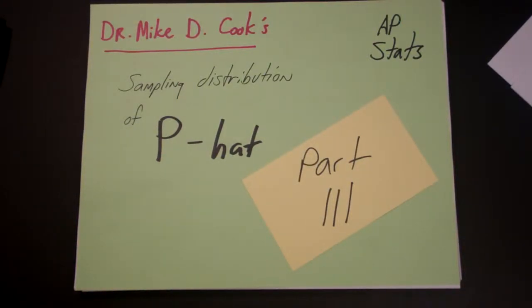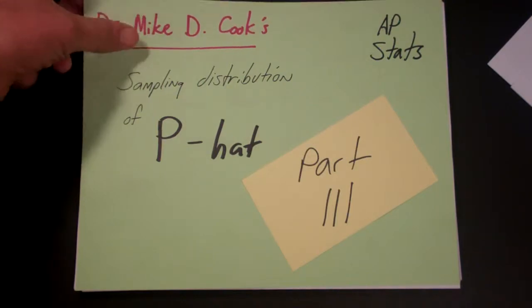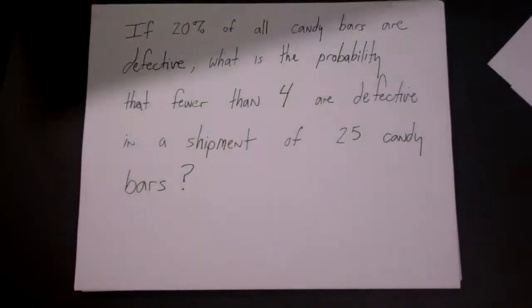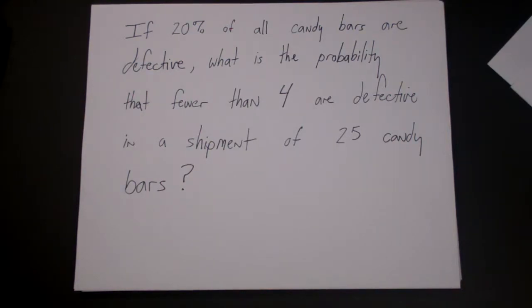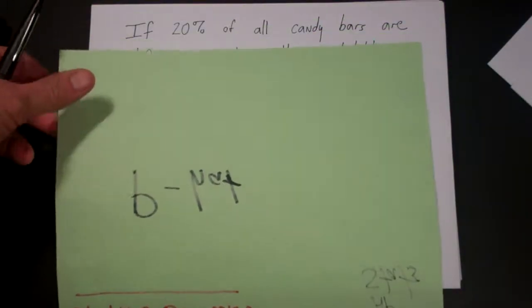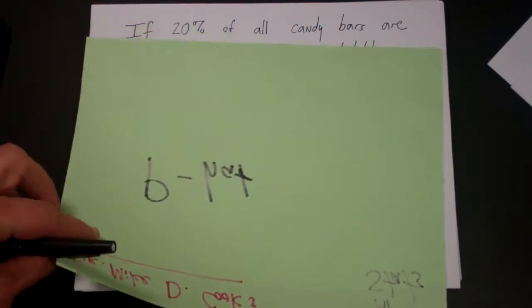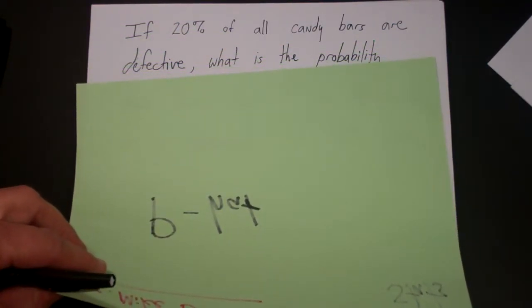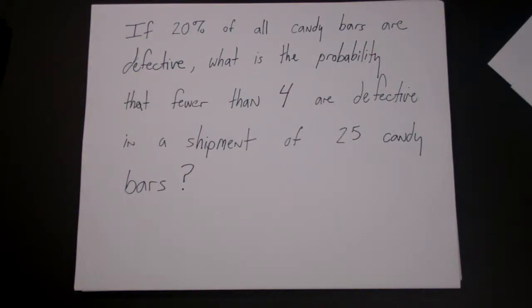This is the third in a series of videos on the sampling distribution of p hat, or the sample proportion. In this problem, we'd like to look at another example. Let's say you have a candy bar manufacturer, and if 20% of all your candy bars are defective, we want to know what is the probability that fewer than four are defective if you have a shipment of 25 candy bars.